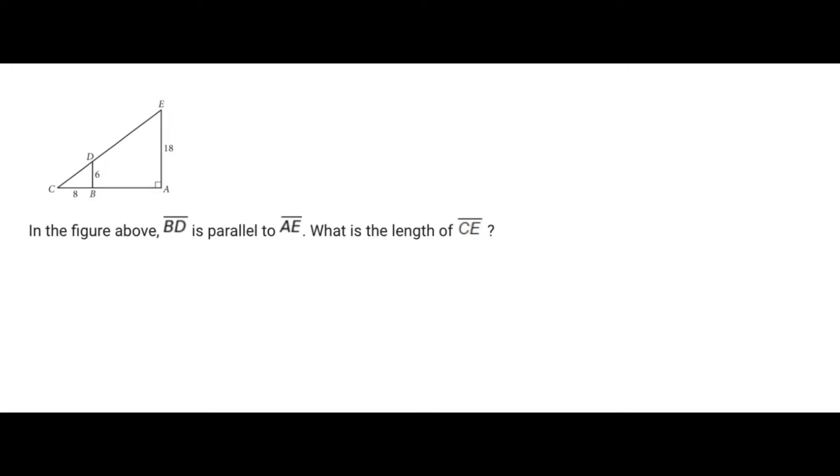For triangle EAC it has that 90 degree angle in the corner and we can see that for the other triangle, triangle DBC, it also has a 90 degree angle which is formed right there. Now where is that other corresponding angle? It's gonna be this angle C right here, so it's gonna be present in both triangles.